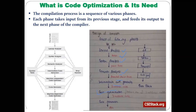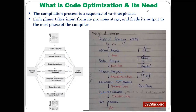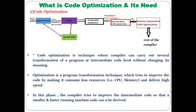The phases up to intermediate code generation come under the front end of the compiler, while code optimization and code generation come under the back end of the compiler. Today we are discussing the first phase of the back end, which is code optimization. The code optimization phase receives intermediate code from its previous phase and works on it.